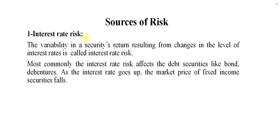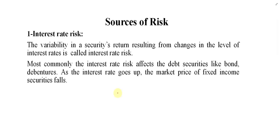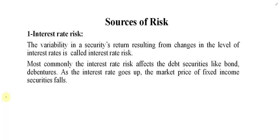If my income increases or decreases and the reason is the interest rate in the market, that risk is called interest rate risk. Similarly, if the fluctuation in my income is caused by the market, you call it market risk; if caused by Ahmad, Ahmad risk. So the reason determines the name of the risk. If there is possible variability in your income or profit due to interest rate, that is called interest rate risk.